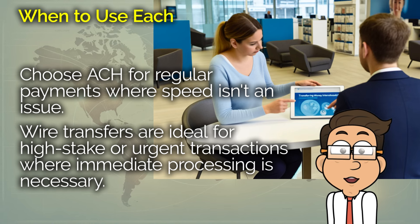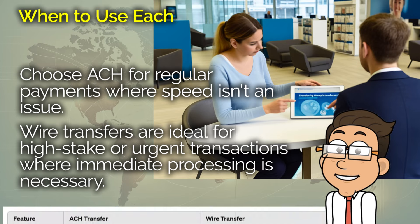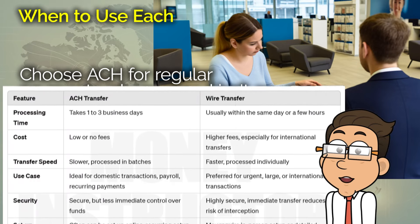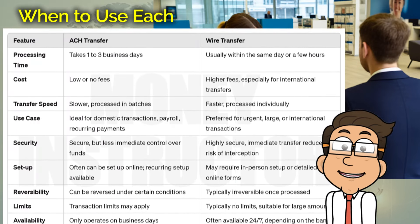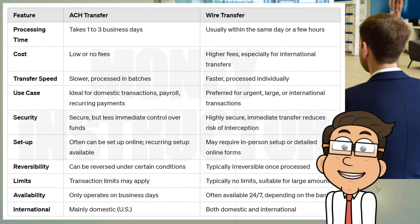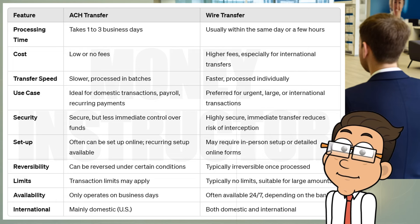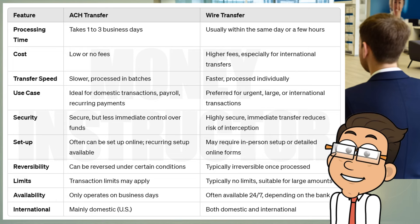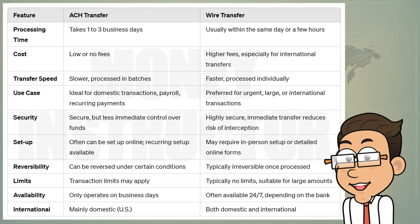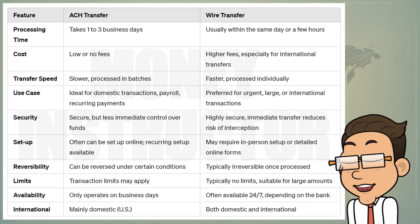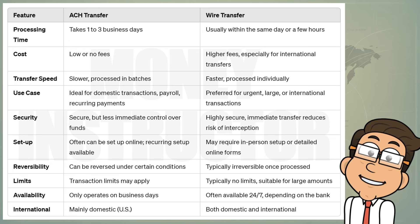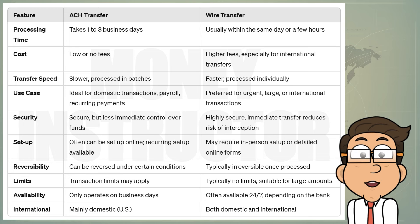Let's not forget about international considerations. If you're sending money abroad, the choice might lean more decisively towards wire transfers, not just because of the speed, but also because ACH is primarily a domestic system. For international wires, you also need to be aware of exchange rates, which can significantly affect how much the recipient actually receives, depending on currency fluctuations.